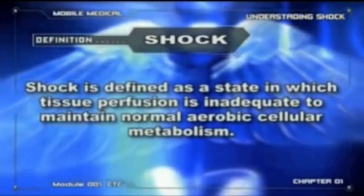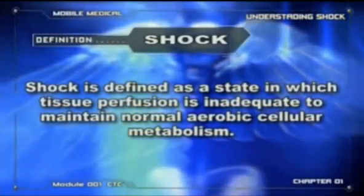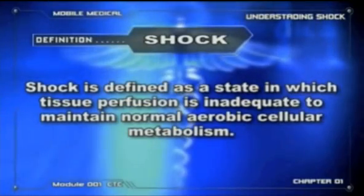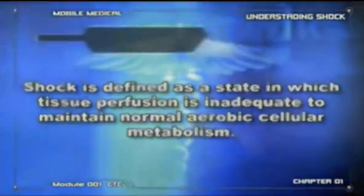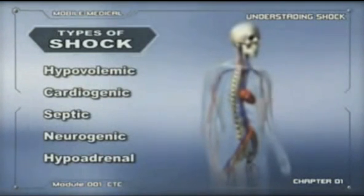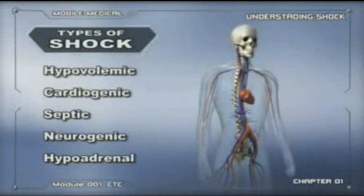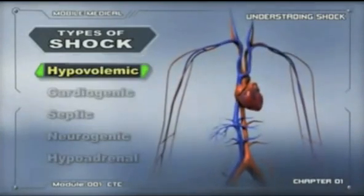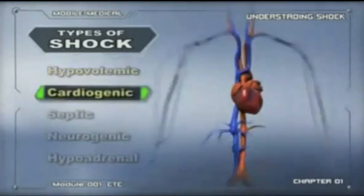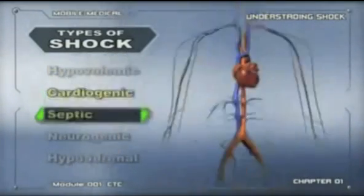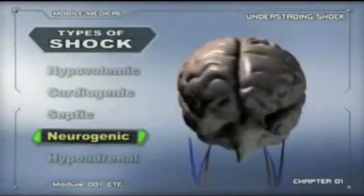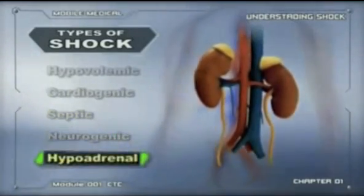Shock is defined as a state in which tissue perfusion is inadequate to maintain normal aerobic cellular metabolism. Shock has been divided into four or five different types according to its etiology: hypovolemic, cardiogenic, septic, neurogenic, and hypoadrenal.